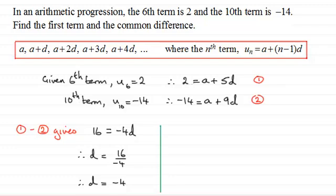And we can do that quite easily by just substituting our value for d, d equaling -4, into either equation 1 or 2. I'm just going to substitute it into 1.